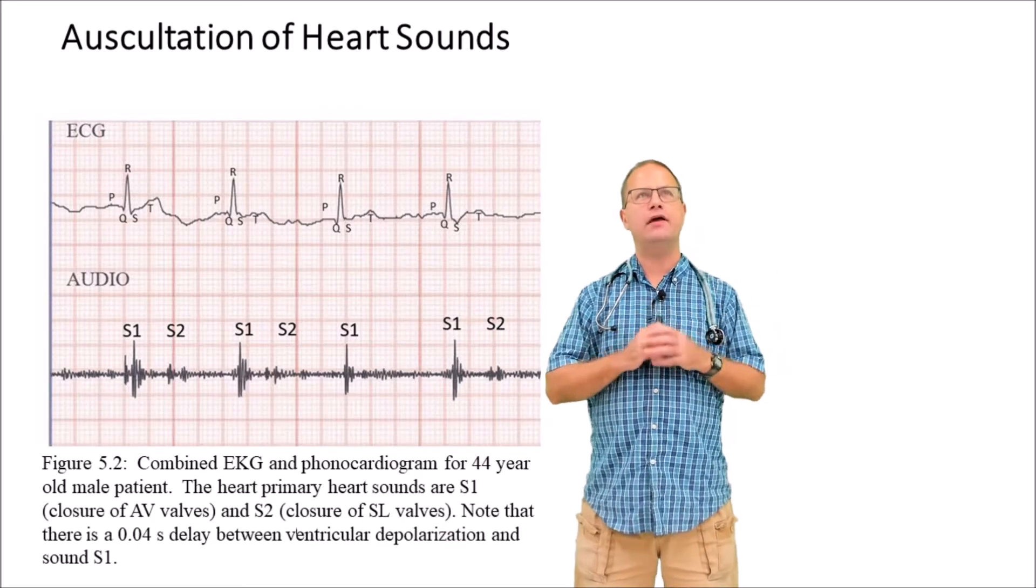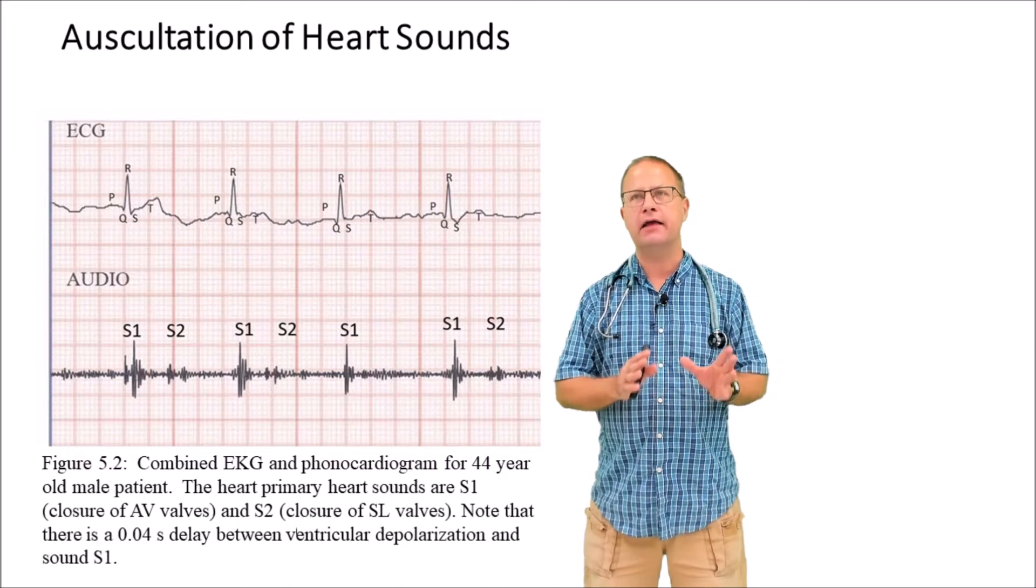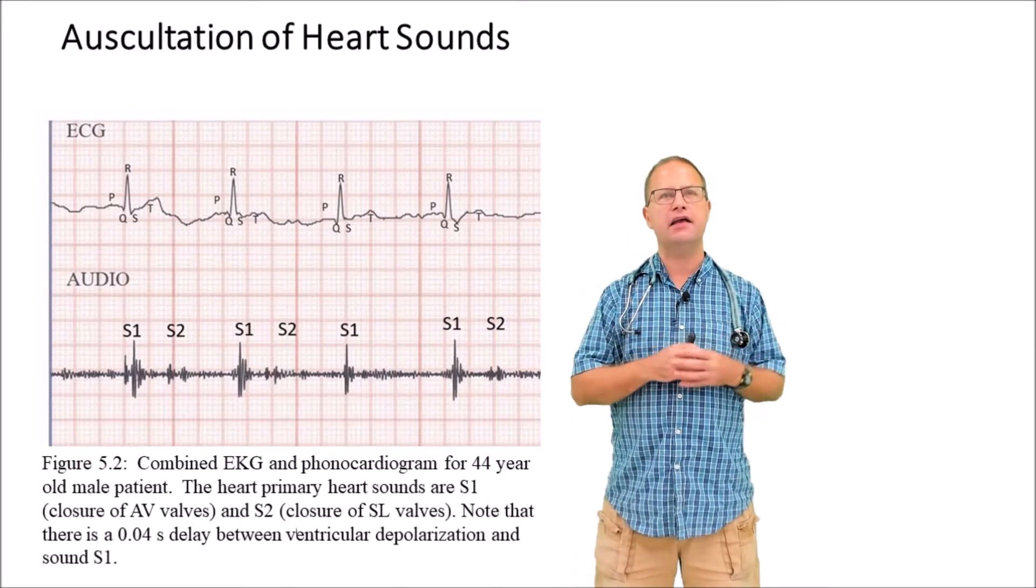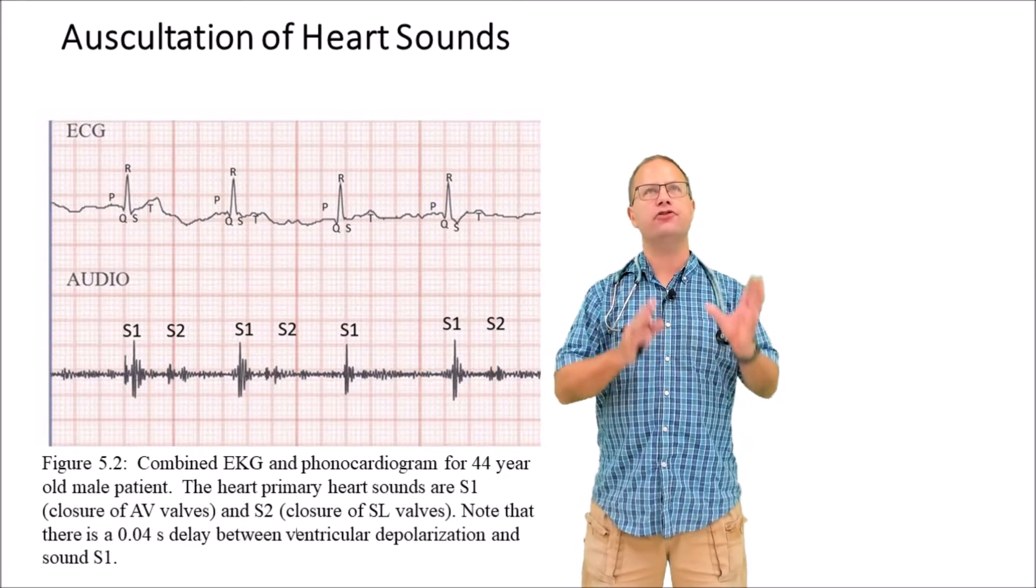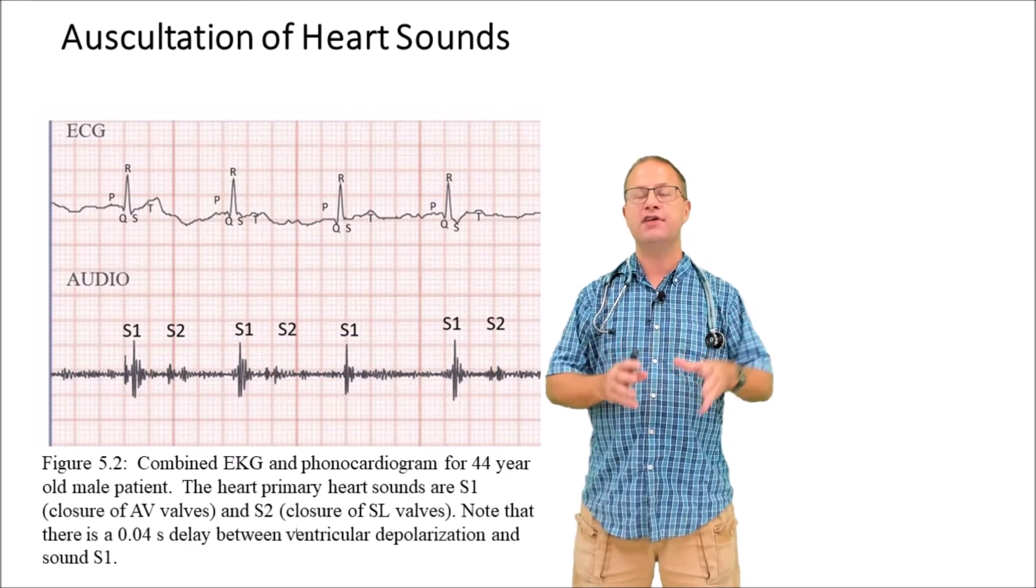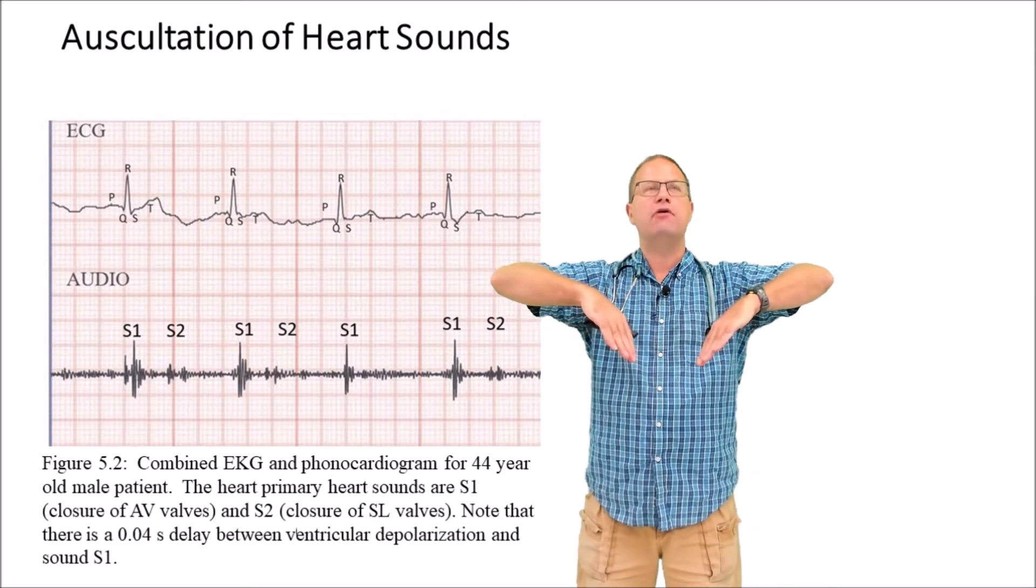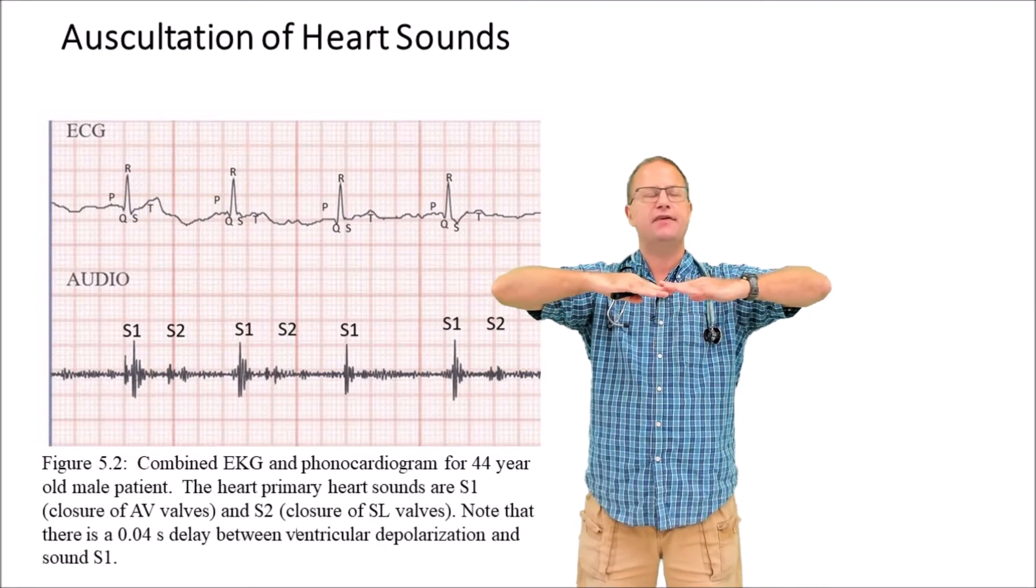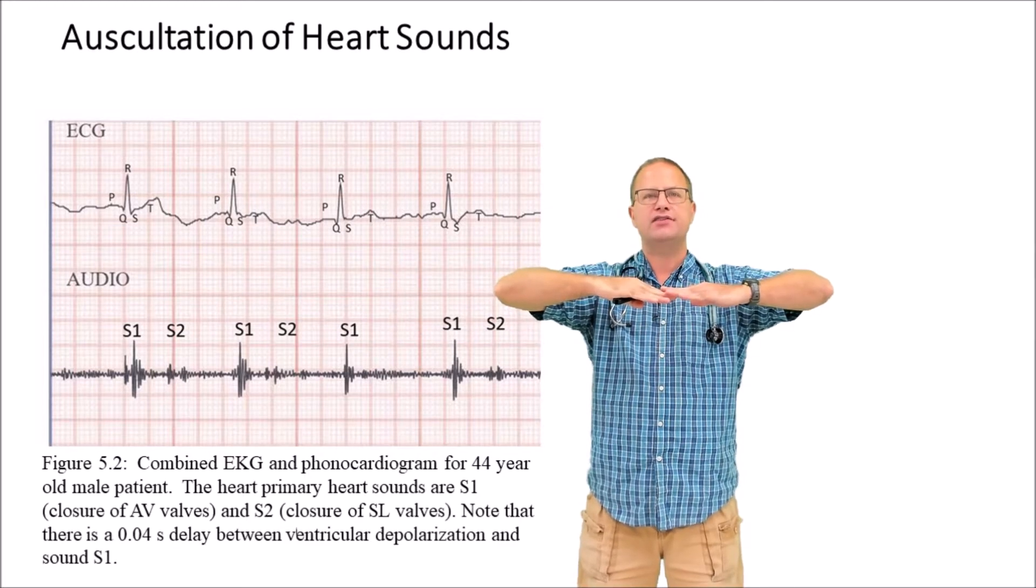If you listen to your heart you've probably heard two different sounds, lub and dub. The first sound, lub, is called S1 or sound one, and this indicates the closure of the atrioventricular valves when the ventricles contract. Initially those valves were open allowing blood to go from atria to ventricle, but when the ventricle contracts it snaps these valves shut, preventing blood from going the wrong direction. That's sound S1.